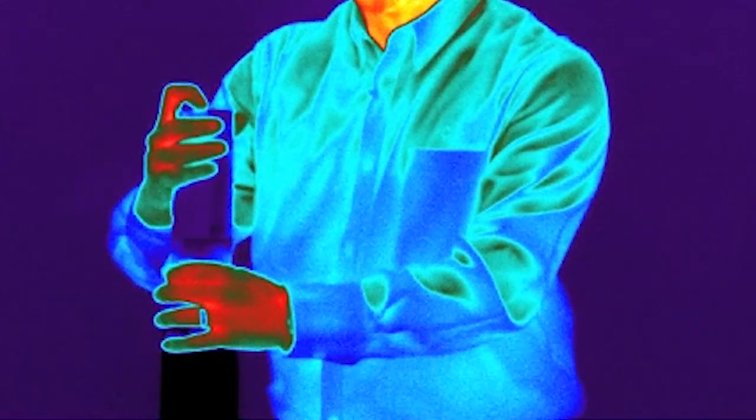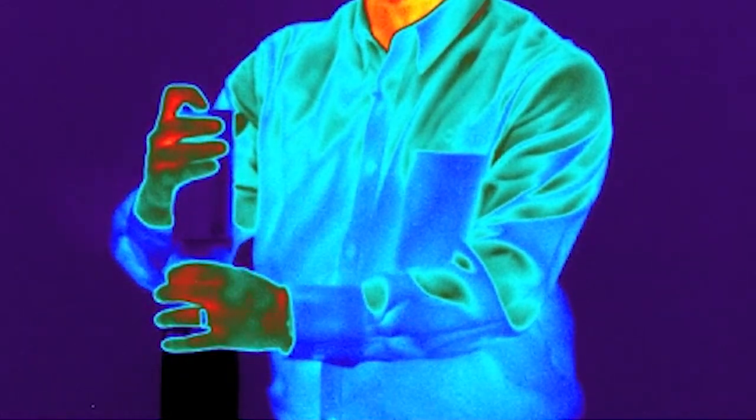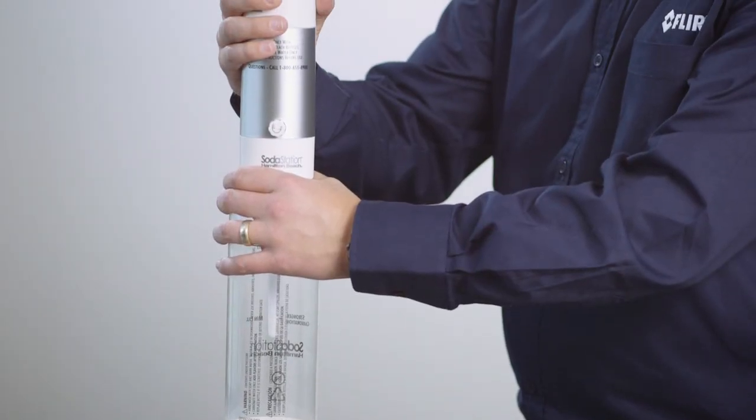You can visually see the gas itself starting to emit from the sides with the IR camera. Notice in the visible spectrum you can't see that.